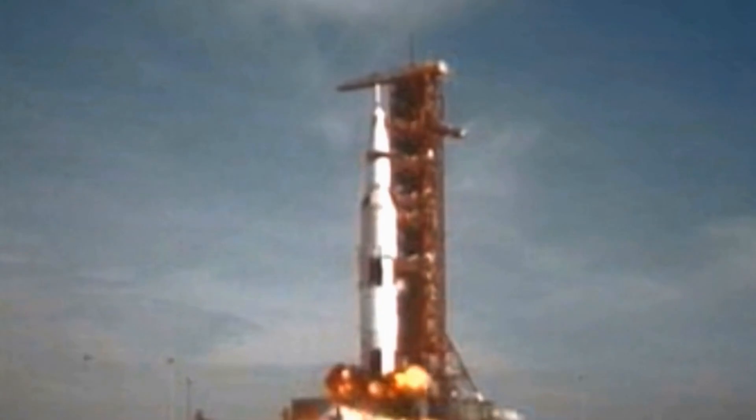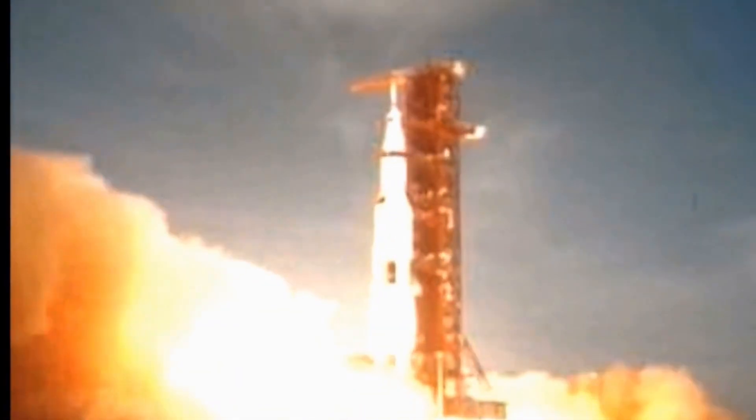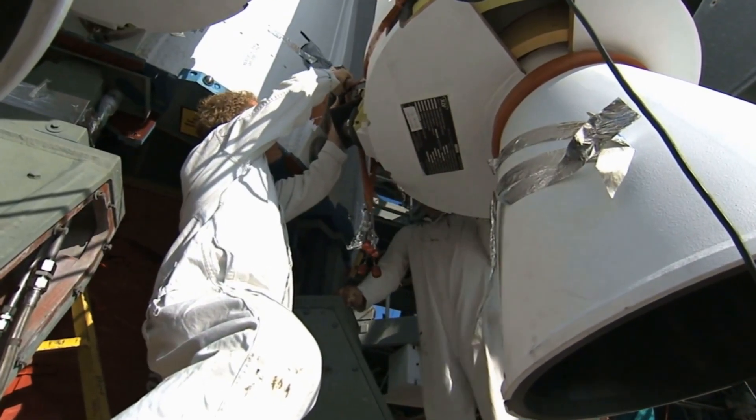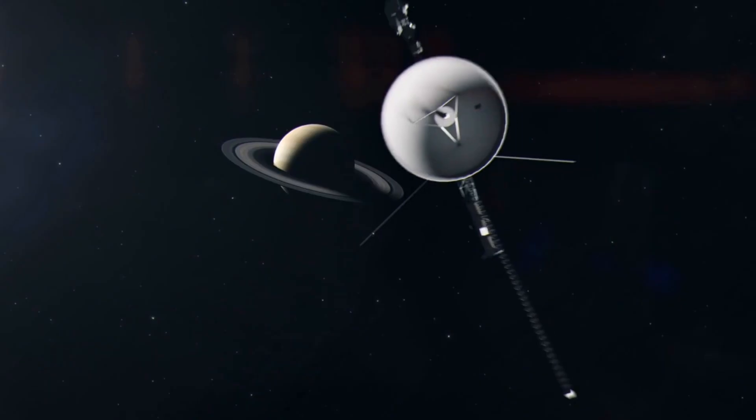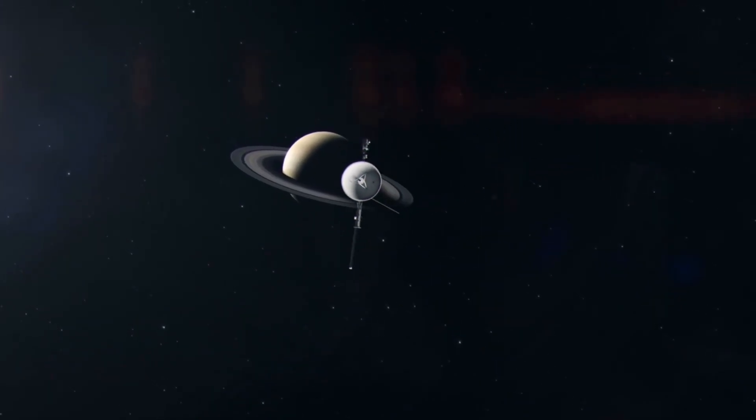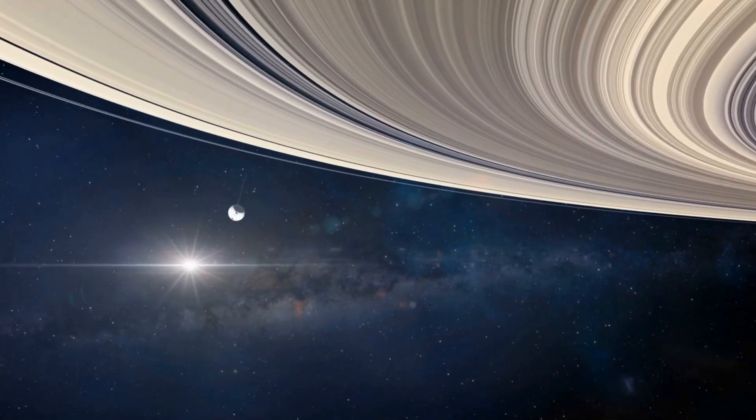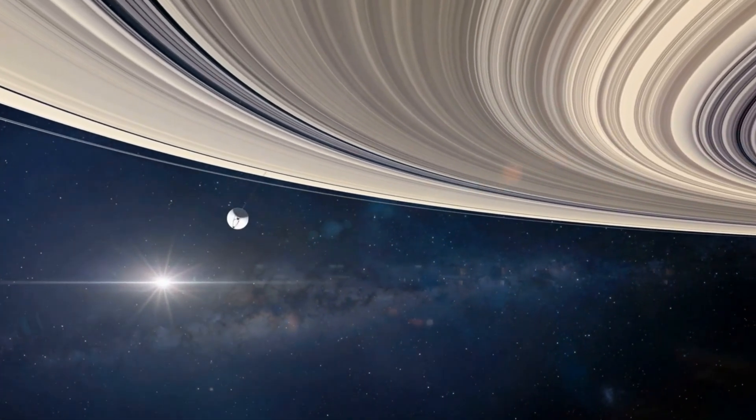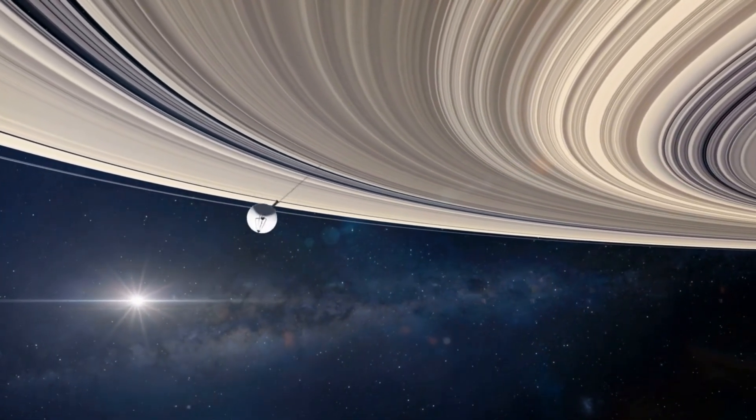Launched with its twin, Voyager 2, this spacecraft was originally designed for a relatively modest mission, a grand tour of the outer planets. Voyager 1 was tasked with flying by Jupiter and Saturn, capturing never-before-seen images and data, forever altering our understanding of the solar system.